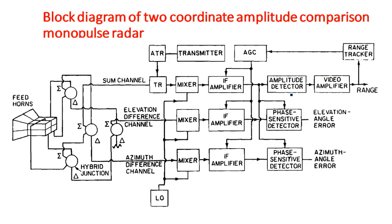This is the block diagram of the monopulse tracking radar in amplitude comparison for the two coordinate system. One parabolic antenna is there with four feeds. A feed is the power-receiving or power-transmitting device. There are four feeds: first, second, third, and fourth. Two feeds work for one coordinate and two feeds work for the other coordinate.